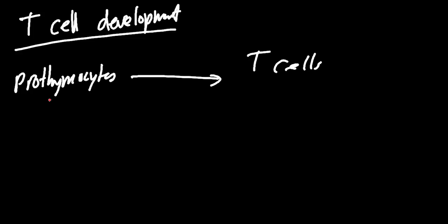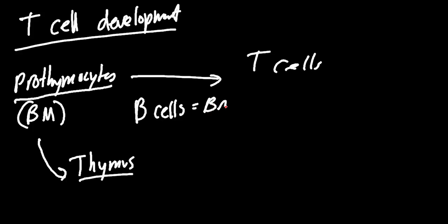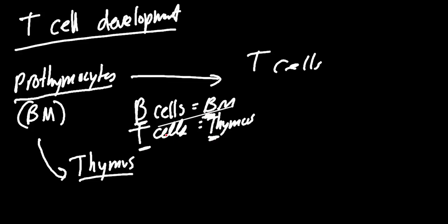This prothymocyte is a T cell precursor and it's going to be made in the bone marrow. It quickly develops and travels to the thymus, because the thymus is where most T cell development happens. B cells mature in the bone marrow; T cells mature in the thymus — easy mnemonic.